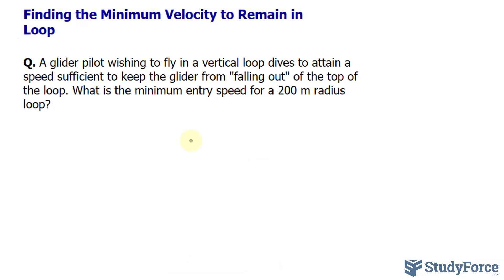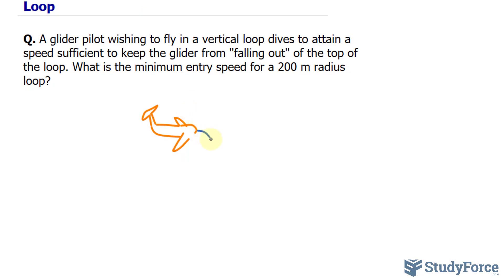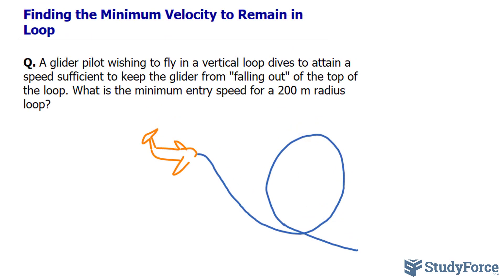Let's take a look at an illustration. So here we have a glider plane. These are its wings and that's the wing further out. It is taking a nose dive so that eventually it can go into a loop that is 200 meters in radius and come out without falling out of this loop.